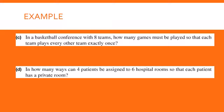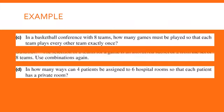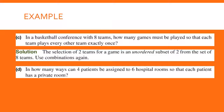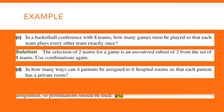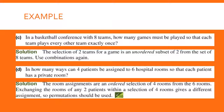For the basketball problem, the selection is unordered — it doesn't matter what order you choose the teams, just so they get chosen — so it's a combination. For part D, the assignments are an ordered selection of four rooms from six rooms; exchanging the rooms of any two patients gives a different assignment, so permutations should be used. You're assigning patients to specific rooms, so order does matter.